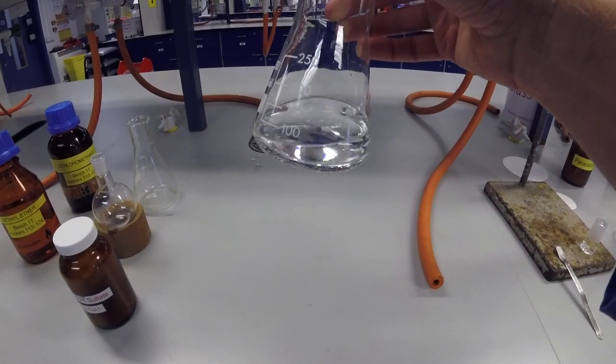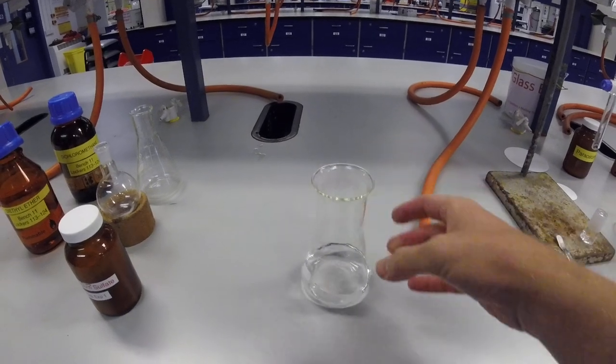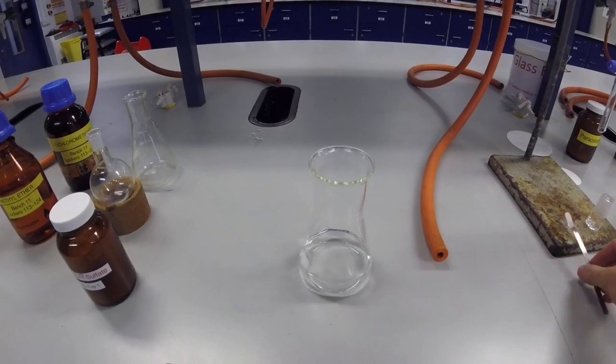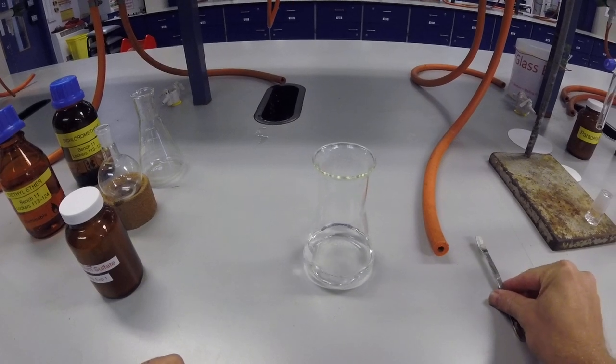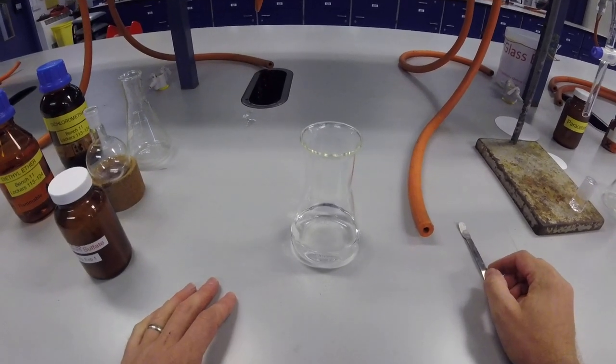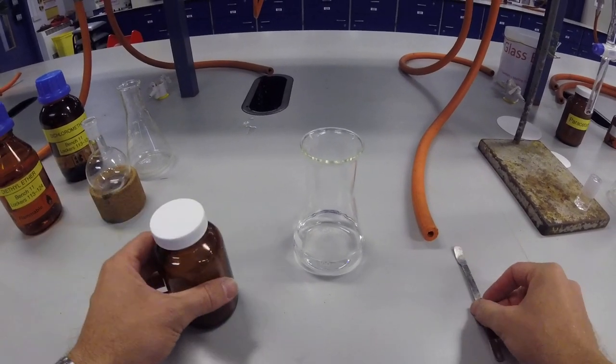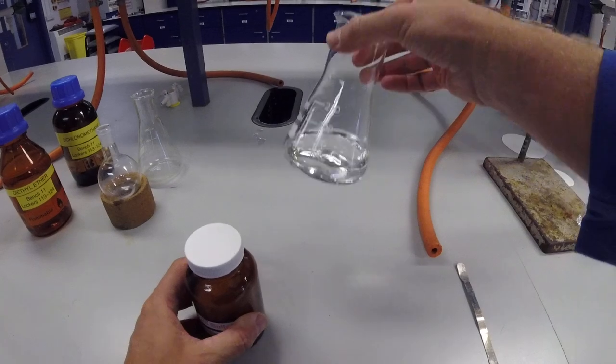Before we can do that, we need to dry the solvent, because the separation itself wasn't particularly very precise at separating out the water from the solvent. And things like ether itself, even though it's immiscible in water, can contain up to 5% water in it. So we want to get rid of that water.